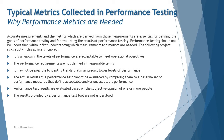Risk one: it is unknown whether the level of performance is acceptable to meet operational objectives. Without metrics, you cannot decide that, and it becomes a big project risk — you don't know what the expectations are, and you're unable to track any parameters that would tell you whether you are meeting them.